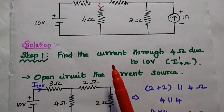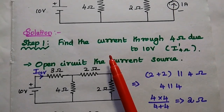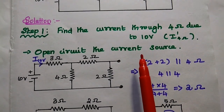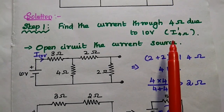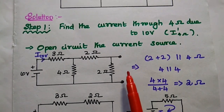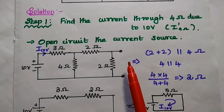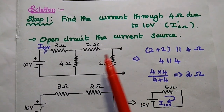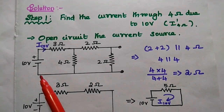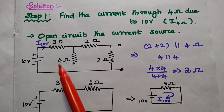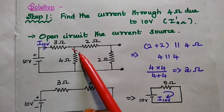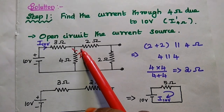In the solution, the first step is to find the current through the 4 ohm resistor due to the voltage source 10 volt. That is known as I dash. At this time, the current source is open circuited. We open circuit the current source and consider only the voltage source, and find the current flowing through this 4 ohm resistor, which is I dash.